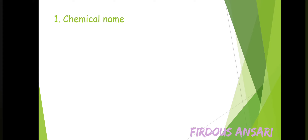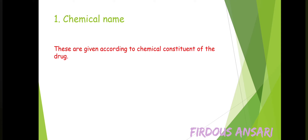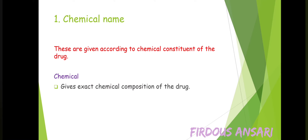First of all, checking out the chemical name. As the name itself says, the name is dependent upon the chemical composition. These are given according to the chemical constituent of the drug. The chemical name gives the exact chemical composition of the drug, including atoms or molecular structure. But this method of nomenclature is quite cumbersome and not suitable for use in prescribing drugs.